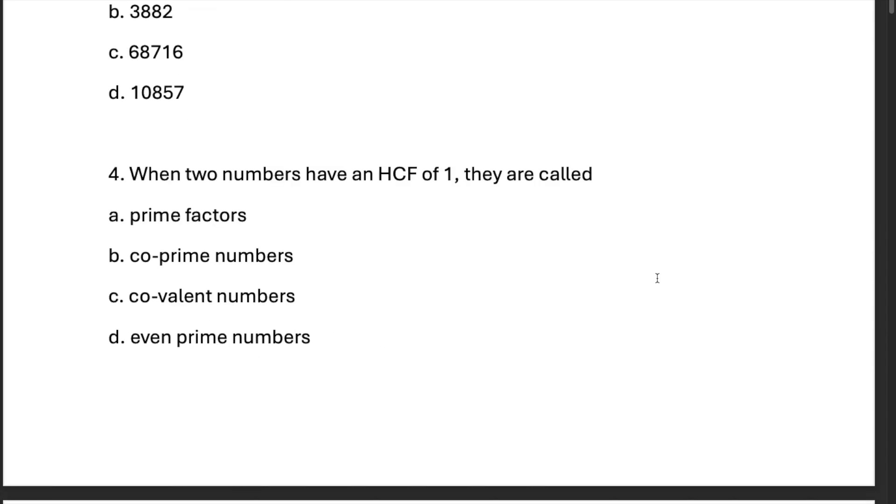When two numbers have an HCF of 1, they are called co-prime numbers.